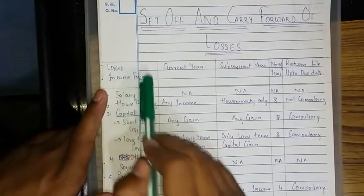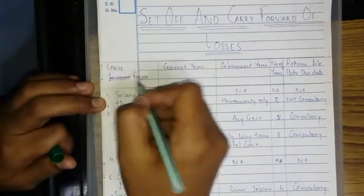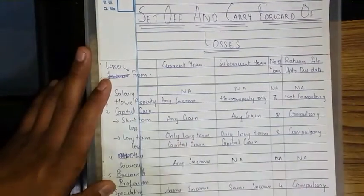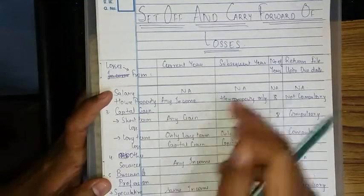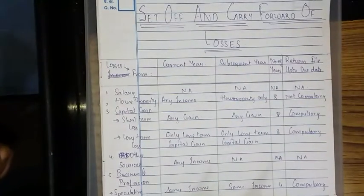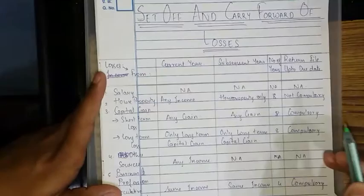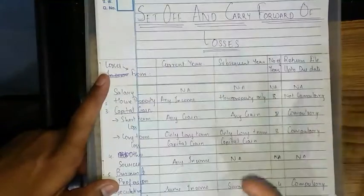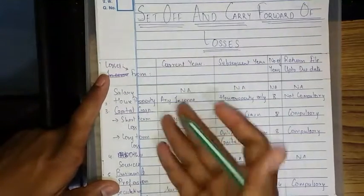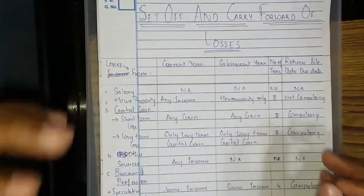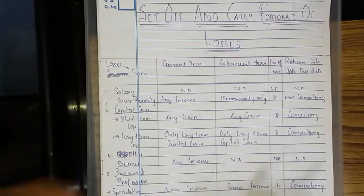Now, income from house property — consider the loss side. If a loss from house property occurs in the current year, such loss will be deducted from any income. Even after that, if an amount of loss remains, that remaining loss will be carried forward to the subsequent year. For example, if the loss is 10 lakhs and 5 lakhs is absorbed against other incomes, bringing total income to zero, the remaining 5 lakhs is carried forward to the next year.